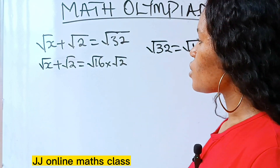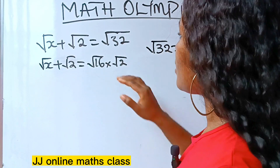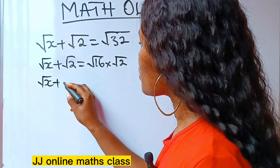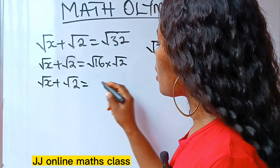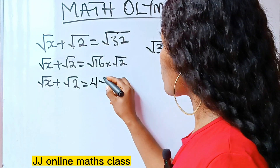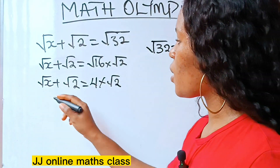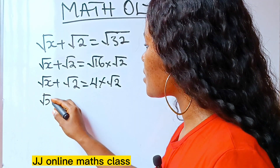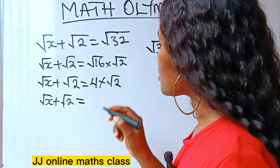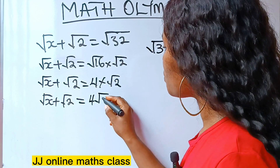What do we do now? Root x plus root 2 is equal to the square root of 16, which is 4, times root 2. So we have root x plus root 2 equals 4 root 2.